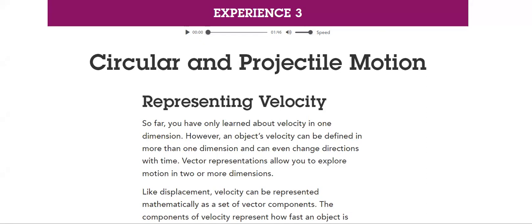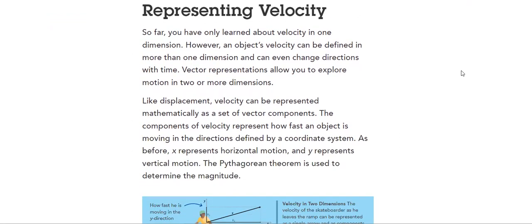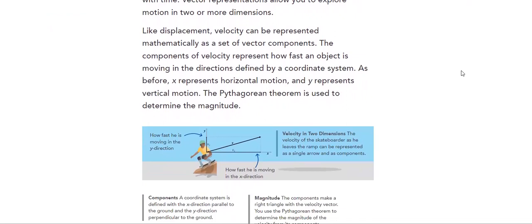However, an object's velocity can be defined in more than one dimension and can even change directions with time. Vector representations allow you to explore motion in two dimensions or even more. Like displacement, velocity can be represented mathematically as a set of vector components. The components of velocity represent how fast an object is moving.